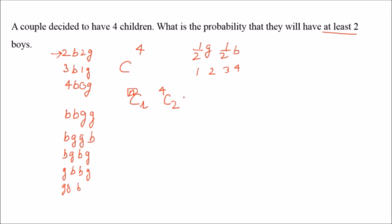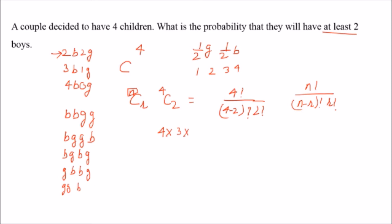To solve the combination C(4,2), we calculate 4! divided by (4−2)! times 2!. The general formula is n! / [(n−r)! × r!]. To calculate factorial: 4! = 4 × 3 × 2 × 1. This gives us the combination result for the first condition — 2 boys out of 4 children.